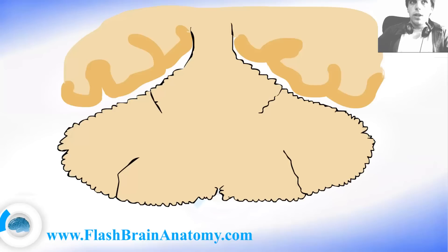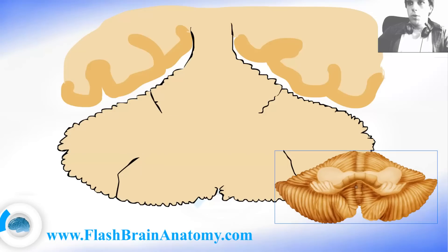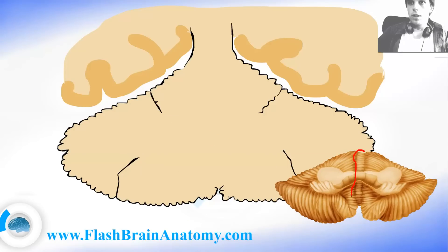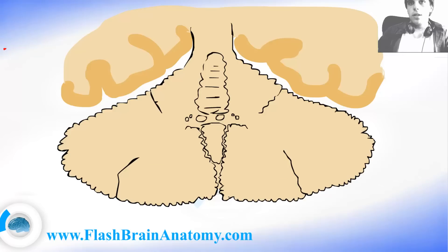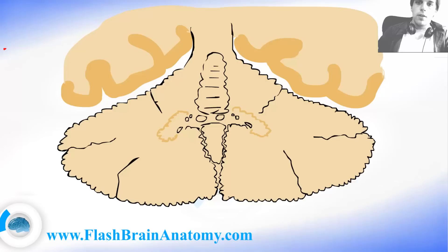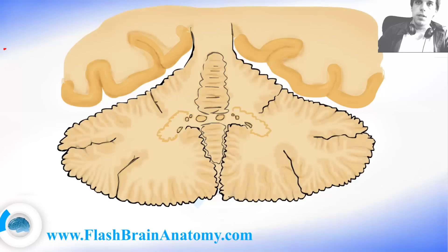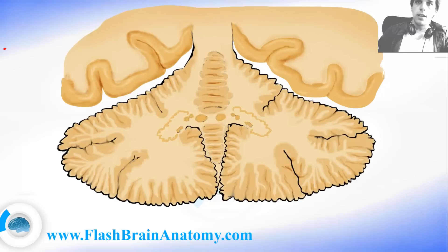Now if you look at the cerebellum from the ventral point of view, you will see this part over here. It is called the vermis, and here is the vermis on this illustration. Then I illustrated the 4 pairs of nuclei that the cerebellum has, and after I Photoshopped it a little bit, this is how it looks.